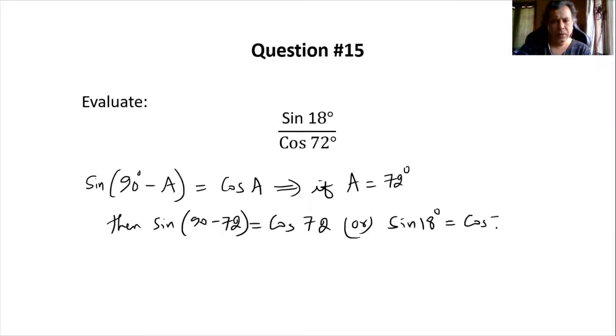That means both are the same. So I can straight away say sin 18 degrees divided by cos 72 degrees, dividing both sides by cos 72, this is one. So that is the first question.